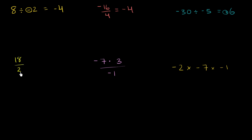18 divided by 2 — this is a little bit of a trick question. This is what you knew how to do before we even talked about negative numbers. This is a positive divided by a positive, which is going to be a positive. So that is going to be equal to positive 9.